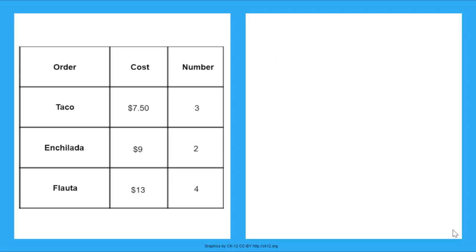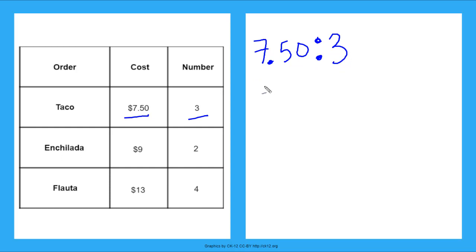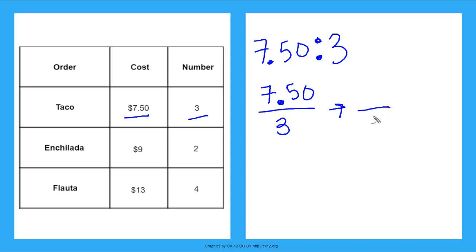Let's start with tacos. What's the ratio of the cost of tacos to the number of tacos? It says here the cost is $7.50 for three tacos, so I can write that ratio as 7.50 to 3, or as a rate of 7.50 over 3. But I need the denominator to be 1 so I know the cost per one taco. So I divide both the numerator and denominator by 3, and I get $2.50 over 1 — that's $2.50 for every one taco.